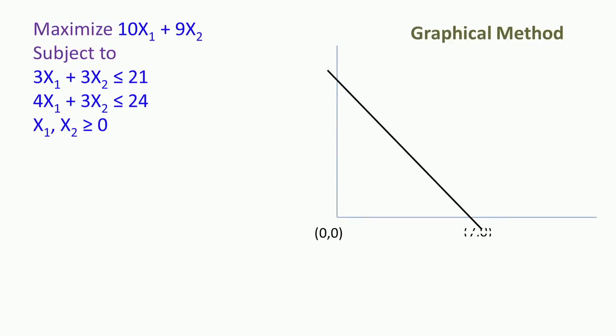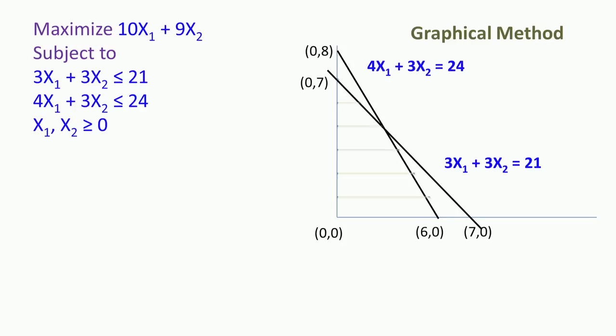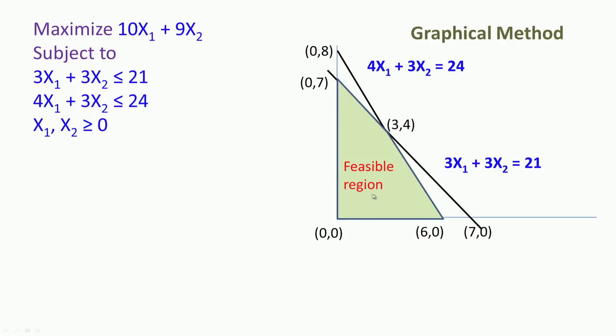Now let us go back to the graphical method and look at what we did, and then go back to the algebraic method to see whether there is a relationship between the two. In the graphical method we found the feasible region and explained that for every point inside the feasible region there is always a boundary point or a corner point which will give a better value of the objective function.